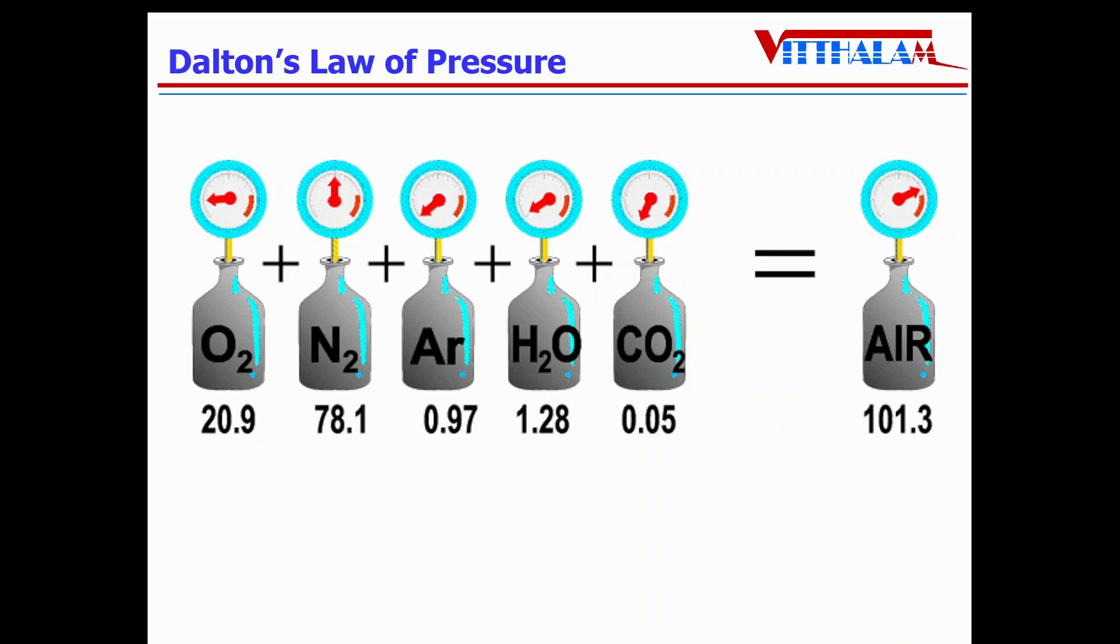So the atmospheric air having a pressure of 101.3 kilopascal is equivalent to the sum of pressures from oxygen, which is 20.9 kilopascal, nitrogen 78.1 kilopascal, argon 0.97 kilopascal, carbon dioxide 0.05 kilopascal, plus pressure exerted by water vapor, that is 1.28 kilopascal.